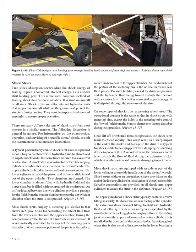A typical pneumatic/hydraulic shock strut uses compressed air or nitrogen combined with hydraulic fluid to absorb and dissipate shock loads. It is sometimes referred to as an air/oil or oleo strut. A shock strut is constructed of two telescoping cylinders closed on the external ends. The upper cylinder is fixed to the aircraft and does not move. The lower cylinder is called the piston and is free to slide in and out of the upper cylinder. The lower chamber is always filled with hydraulic fluid and the upper chamber with compressed air or nitrogen. An orifice between the two cylinders provides a passage for fluid from the bottom chamber to enter the top cylinder chamber when the strut is compressed. Most shock struts employ a metering pin to control the rate of fluid flow.